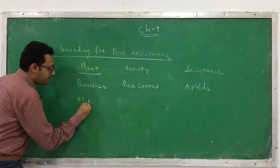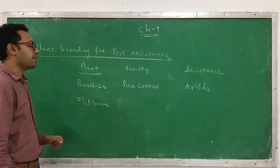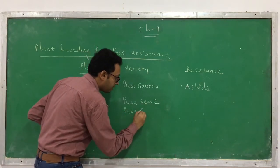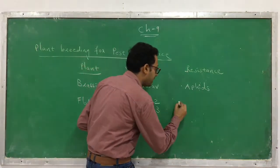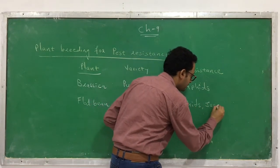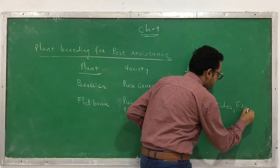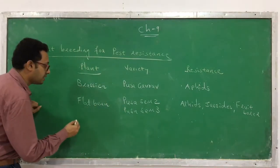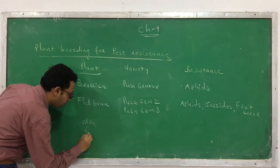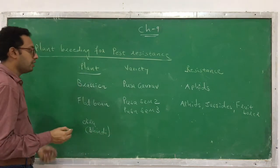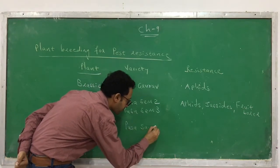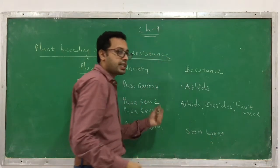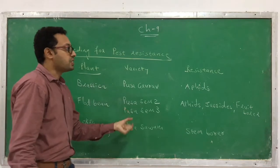Similarly, in the plant called flat bean, the varieties generated are Pusa Sem 2 and Pusa Sem 3. These varieties are resistant against aphids, jassids, and fruit borer. The third example is okra, commonly called bhindi. The variety generated here is Pusa Sem 3, which is resistant against stem borer. These are the pest-resistant varieties of different plants generated through plant breeding.